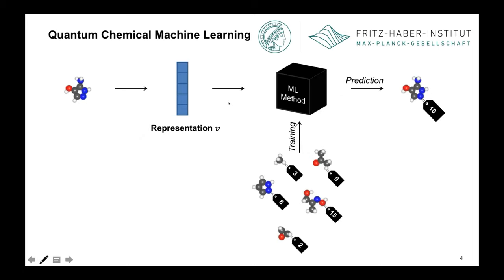In a very cartoonish way, your regression model looks like this: you take your 3D coordinates, you build a representation — typically a vector, or more precisely one vector for each atom — and then this representation gets fed into the machine learning model, which makes a prediction. The way the ML model knows how to do this is that it's been trained on other labeled molecules. So you have some upfront investment in quantum chemical calculations, but once training is done, your prediction will be very cheap. You typically make gains because you may only need to train on five, ten, or twenty percent of a database.